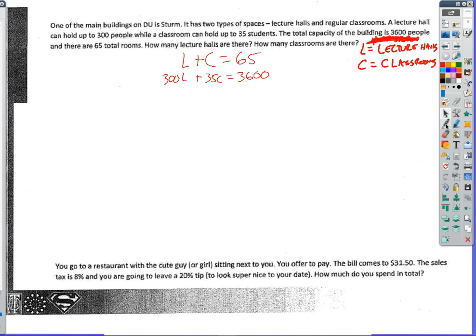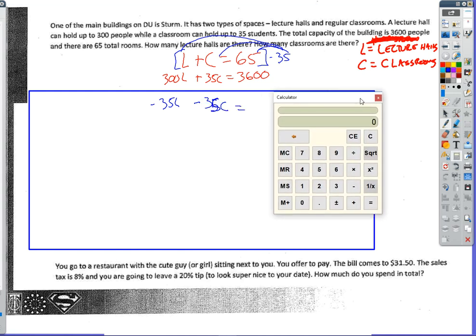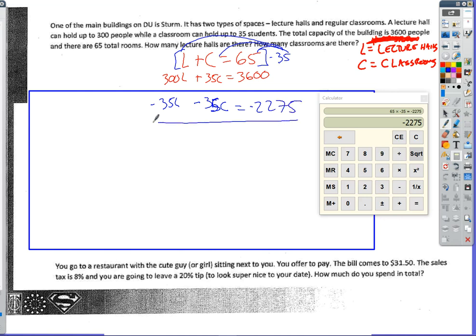I'm going to multiply this equation here by maybe negative 35. And when I multiply this out, that's going to end up giving me negative 35C, which is the opposite of positive 35C. It will also give me negative 35L. And when I multiply 65 times 35, I get negative 2275. So let's go ahead and add these two equations together.